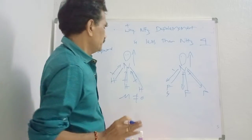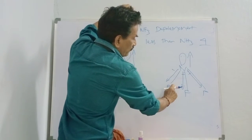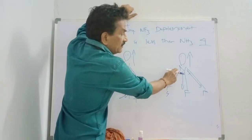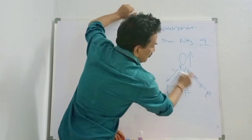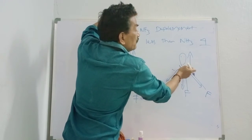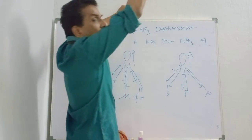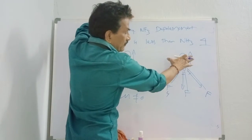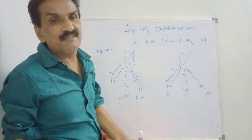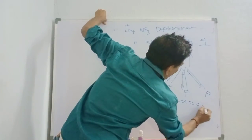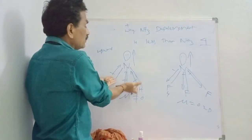In NF3, fluorine is more electronegative and nitrogen is less electronegative, so the N-F bond dipoles point downward - toward fluorine. Due to the lone pair on nitrogen, the bond movement is from nitrogen upward. So the N-F bond dipoles point downward while the lone pair dipole points upward. They are somewhat cancelled out with each other. The net dipole moment mu is approximately 0.2 Debye - very, very less. In NH3, all dipoles are in the upward direction.